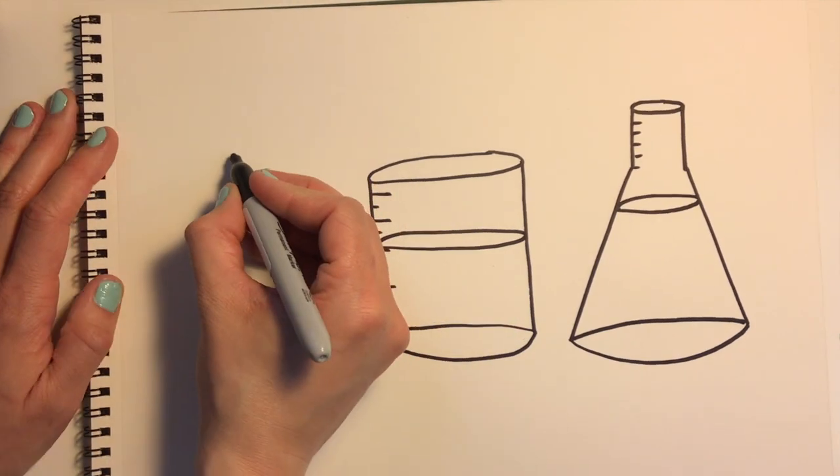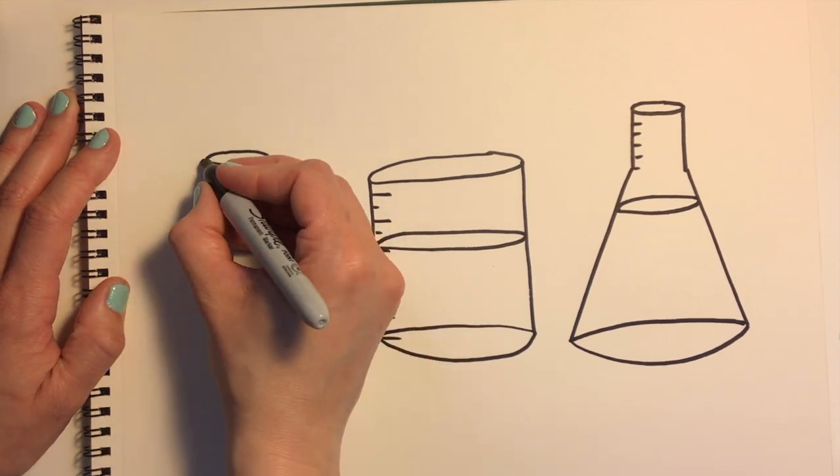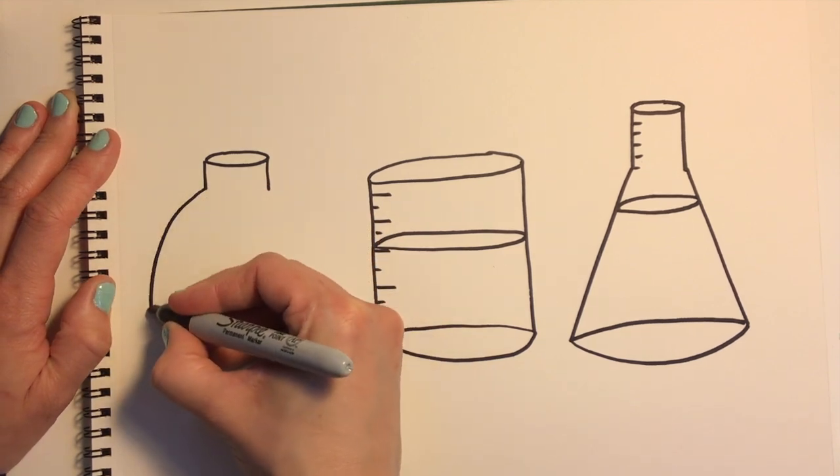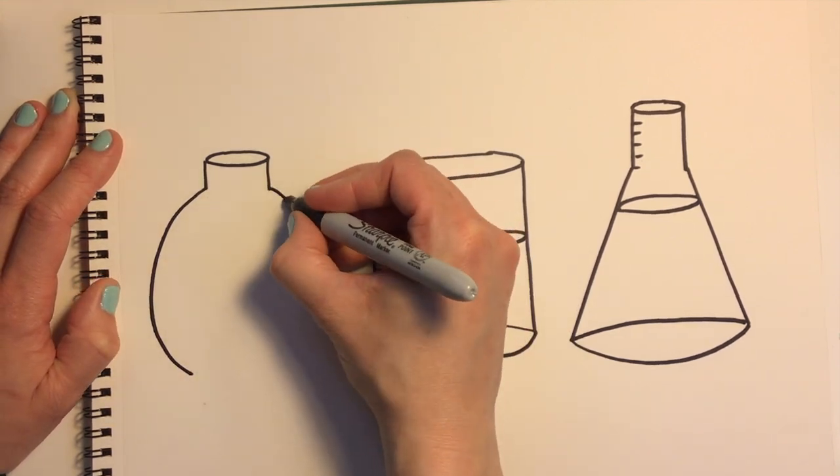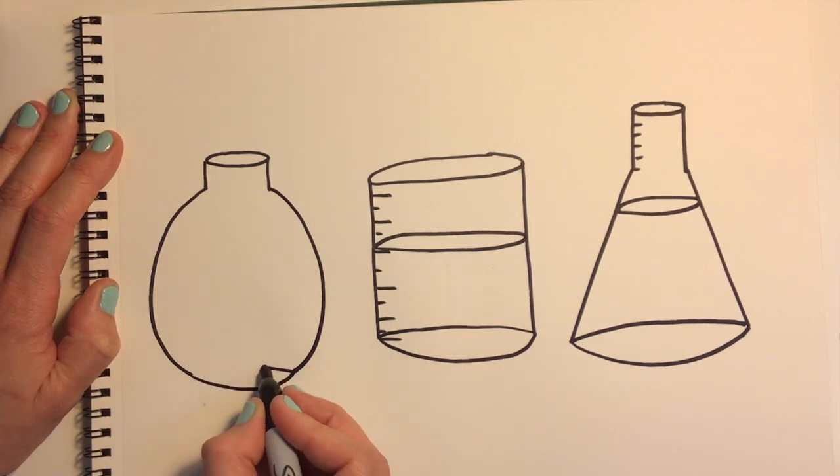Now we're going to make a spherical beaker. Start with the flat oval again, two short vertical lines, curve to the left, big curve to the right, and a flat oval at the bottom to keep it from rolling off our table.